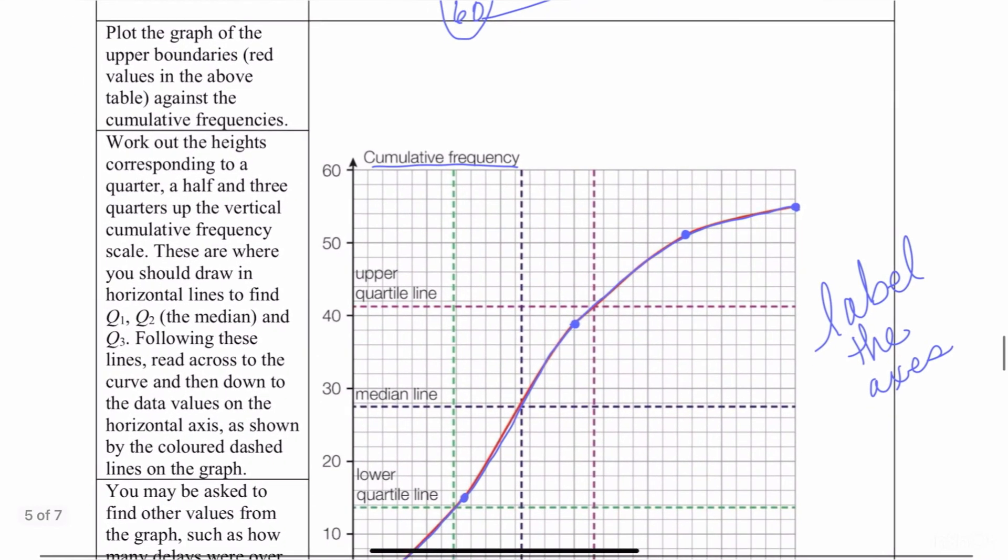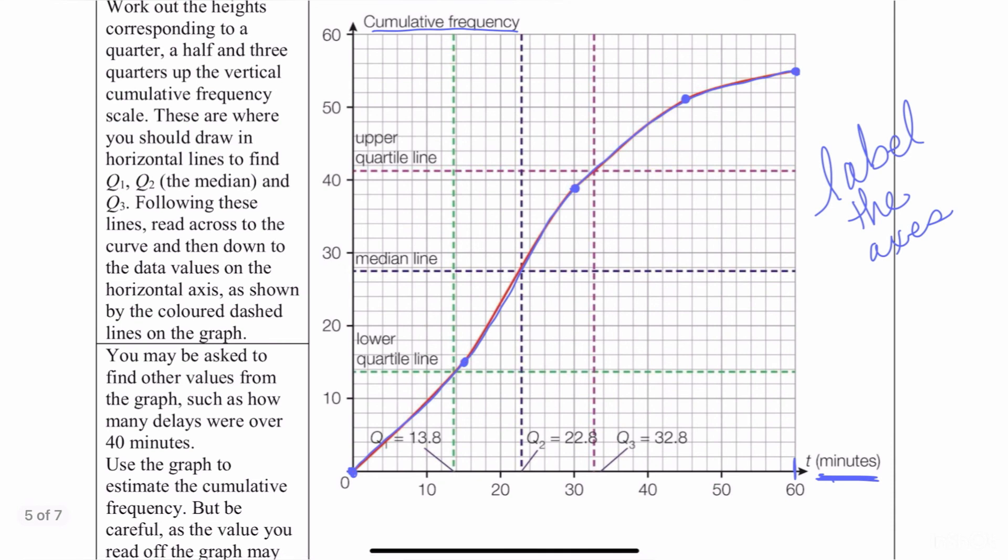I go down to the graph. I go ahead and I plot those ordered pairs. I connect them with a smooth curve, and make sure that you label your axes. That's all. Very easy. Hopefully, you found this video helpful. In another video, I'm going to show you exactly how you're going to use these type of graphs to answer questions.